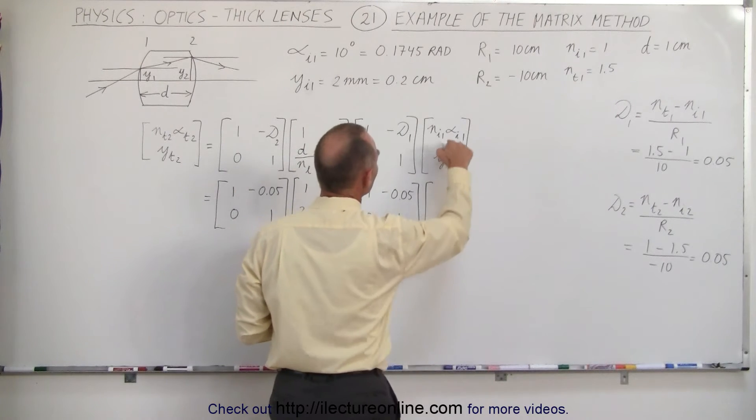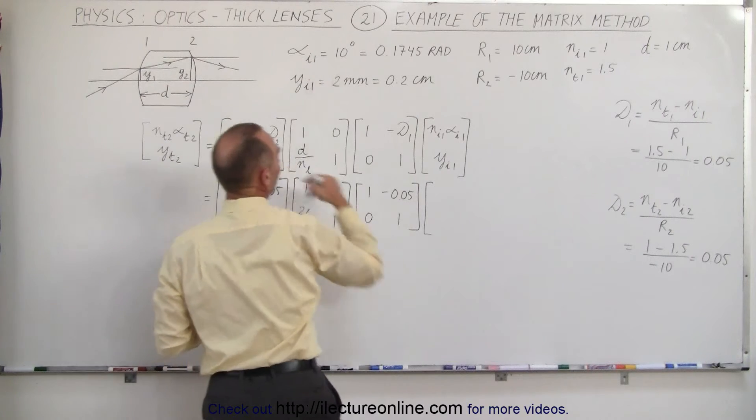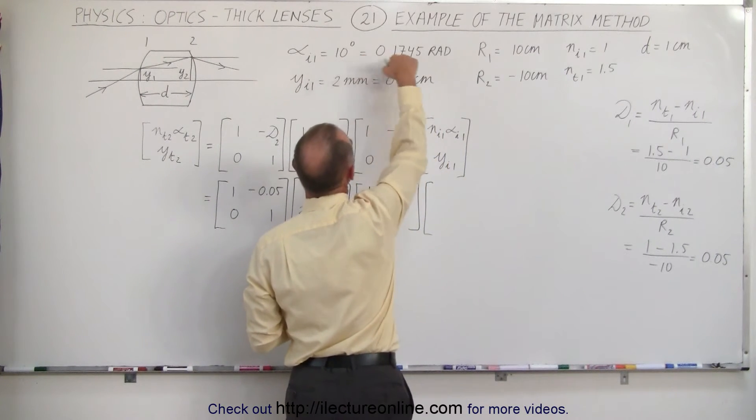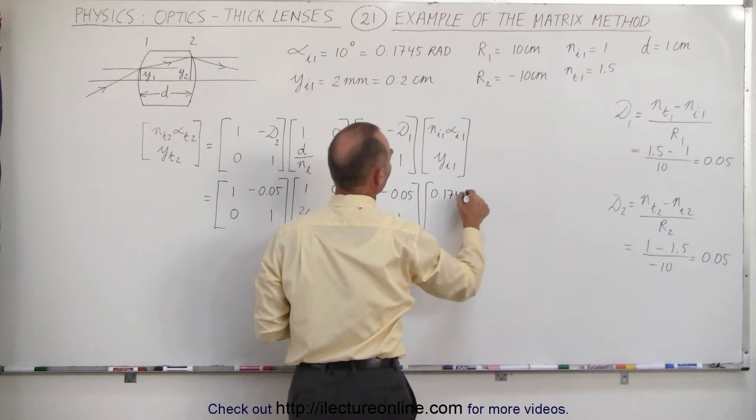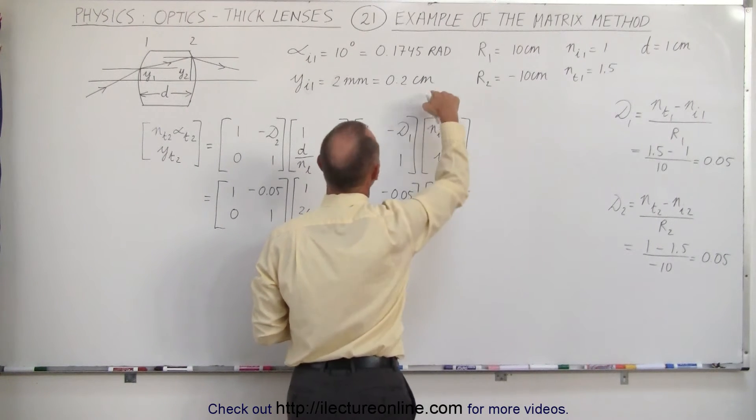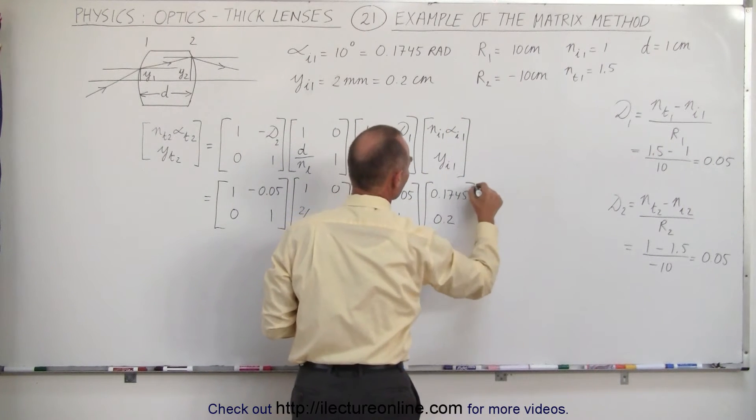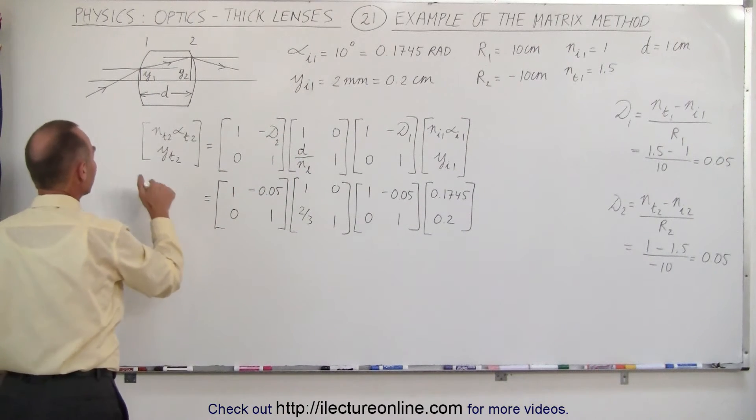And then finally, we plug in the values here, index of refraction outside the lens, which is 1 times alpha I1, which is 10 degrees converted to radians, or 0.1745. And finally, the height above the optical axis, 2 millimeters, which is 0.2 centimeters. So these are the initial conditions of the lens, we want to know the final conditions of the lens.